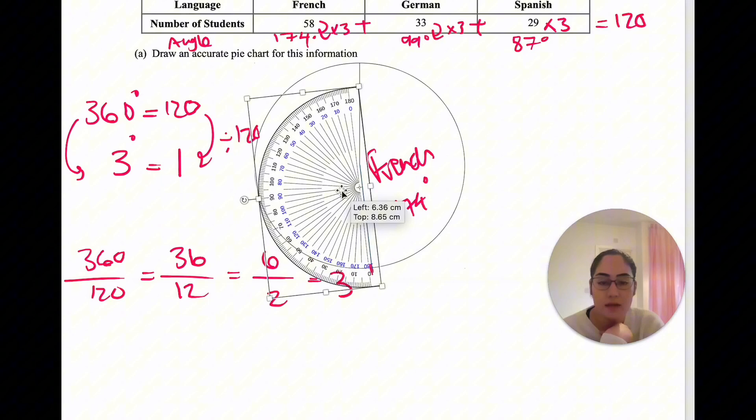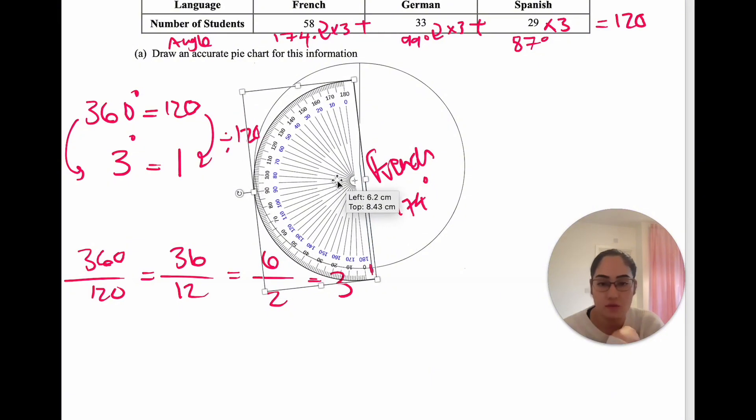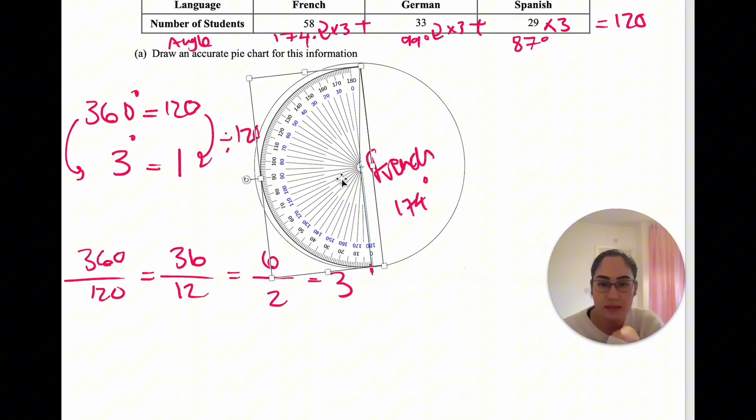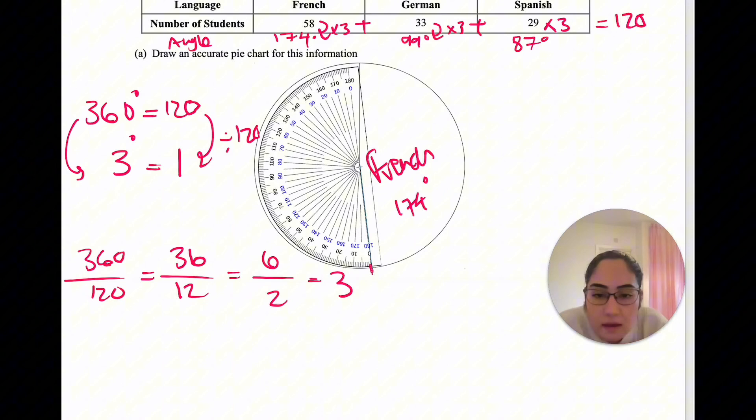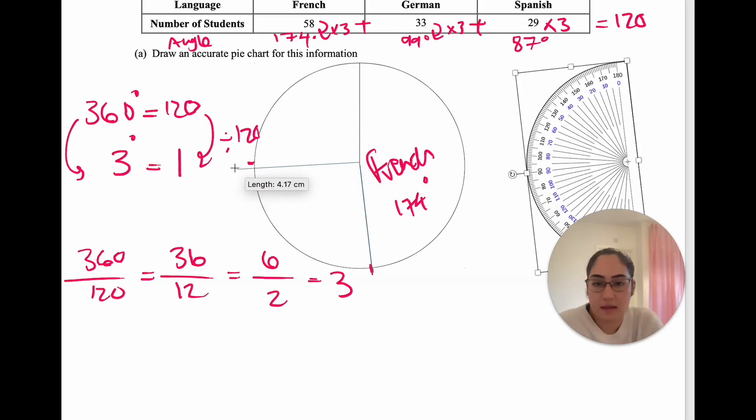Then grab the protractor again, align your 0 once again with the line you've just drawn, and measure. The next category, German, is represented by 99 degrees. We measure from 0 to 99, which is right here. Add that line in from the centre to the line we've just drawn, and the second category represents German.